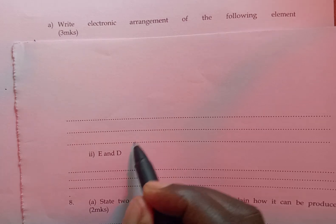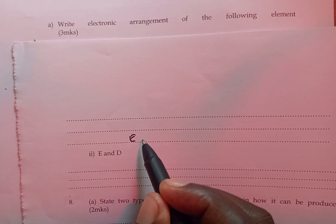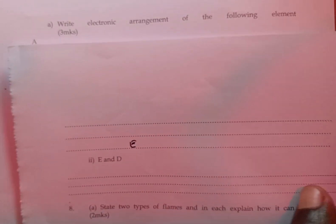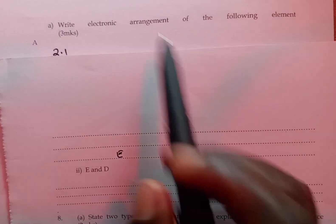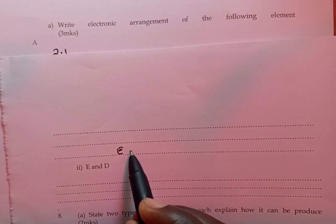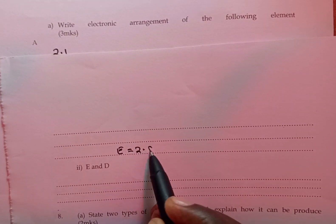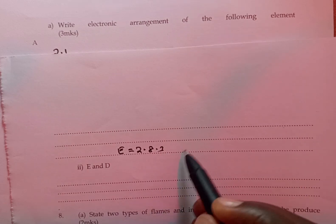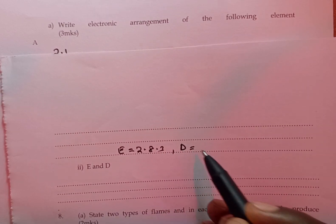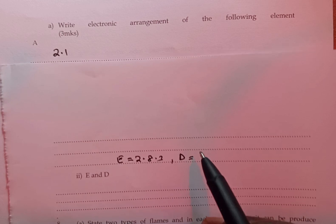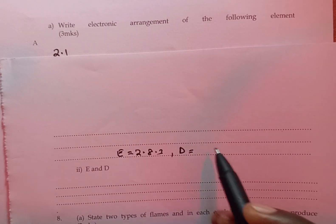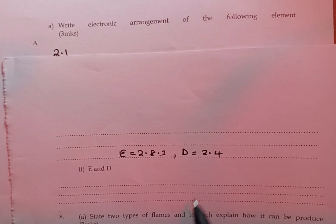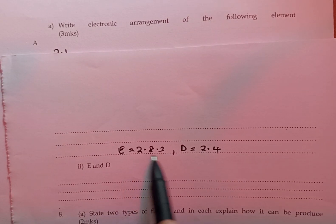Remember E is in group 3, period 3, with an electron arrangement of 2, 8, 3, meaning it has a valency of 3. And then of course D is in group 4, with 2, 4 since it is in period 2.